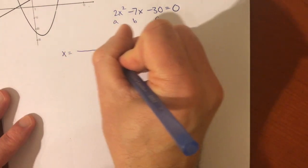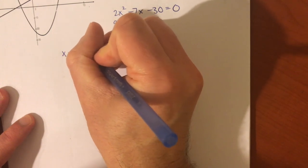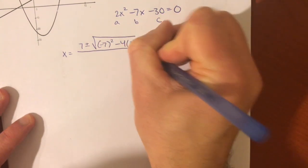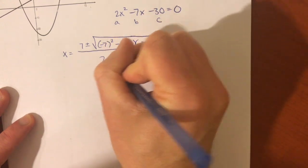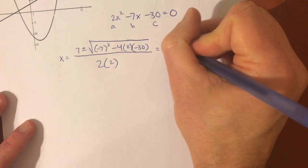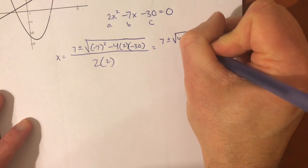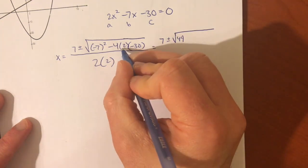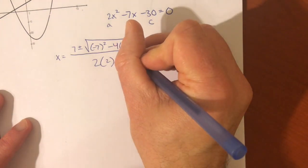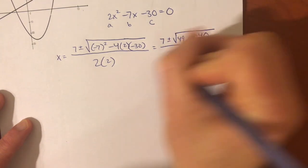x equals, and we may as well sing it, x is equal to negative b, so that's 7, plus or minus the square root of b squared minus 4ac, all over 2a. And now, we just take our time and simplify this. So, that's 7 plus or minus the square root of negative 7 squared is 49, negative 4 times 2 times negative 30, that's positive, 4 times 2 is 8, 8 times 30, that's 240, all divided by 2 times 2, which is 4.